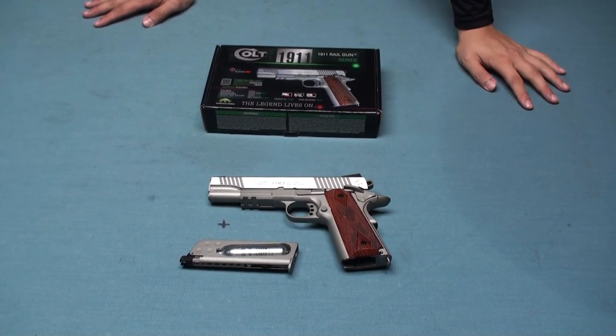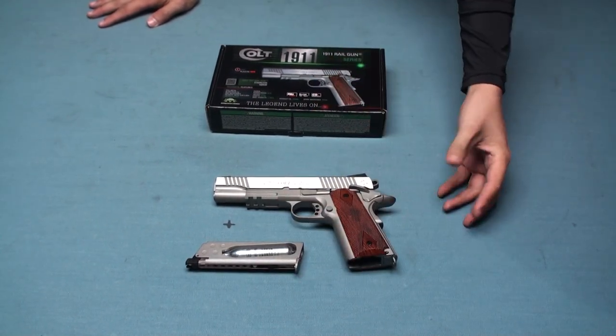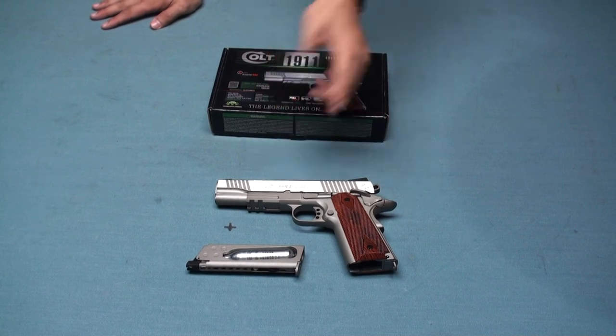It's powered by a CO2 cartridge and loads 17 rounds of BB bullets inside this magazine. Of course, you can add one more round inside the chamber.